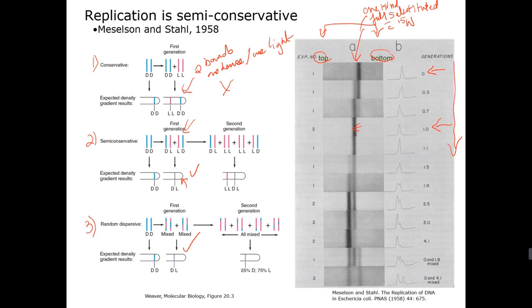So they collected more samples and they did this for the 1.1, 1.5 and 1.9, which I guess is close enough to the second generation time point. So at this point what do we see at the second generation? We actually see two bands. I've just circled that there.